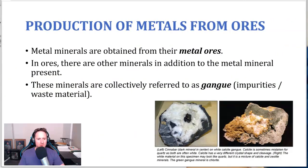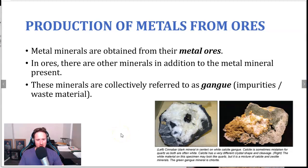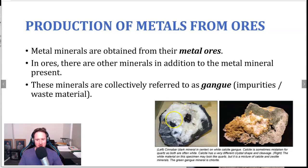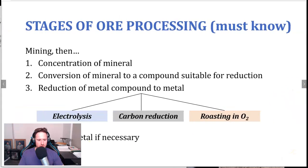Metal minerals are obtained from their metal ores — we can't start from the mineral itself; we start from a metal ore, which contains multiple minerals in addition to the metal mineral. The other minerals are collectively referred to as gangue — impurities or waste material. For example, cinnabar is the dark mineral in the centre that contains the metal, while the white calcite gangue on the outside is another mineral containing no metal compound and is a waste product in terms of extracting the metal.